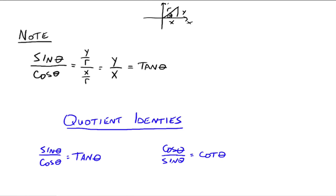These are called the quotient identities. Tangent theta is the same thing as sine theta divided by cosine theta, and cotangent theta is the same thing as cosine theta divided by sine theta. You just need to know that tangent theta can be written as sine over cosine, and cotangent can be written as cosine over sine.